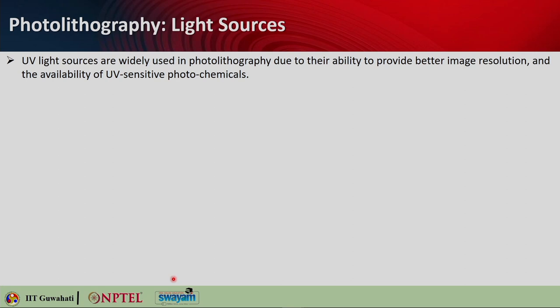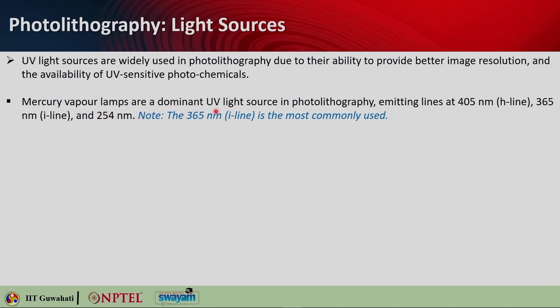When we look into photolithography, UV light sources are widely used because of their ability to provide better image resolution and the availability of UV-sensitive photochemicals. UV light has shorter wavelength and higher energy compared to visible light. Mercury vapor lamps are the dominant UV light source in photolithography, emitting lines at 405 nm (H line), 365 nm (I line), and 254 nm. Among these, the 365 nm I line is the most commonly used.